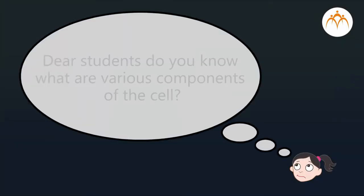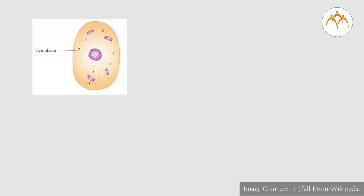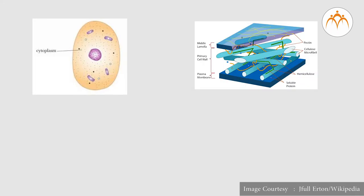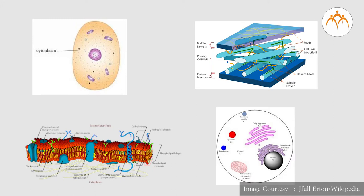Do you know what are various components of the cell? Main components of the cell are cytoplasm, cell wall, cell membrane, and different cell organelles.